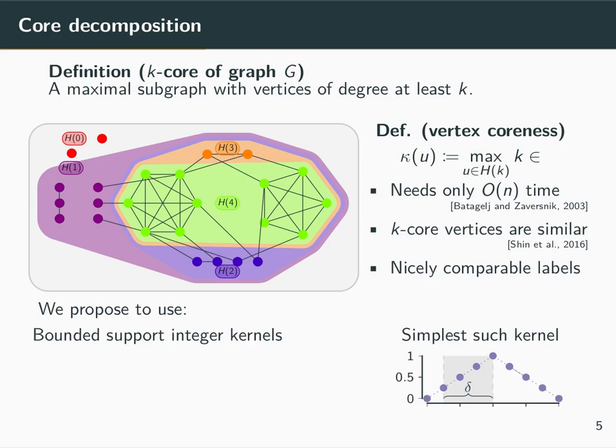This is well applicable to coreness because the latter is an integer value property and also close values indicate similar structure of vertices.